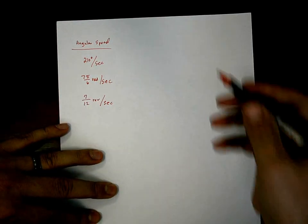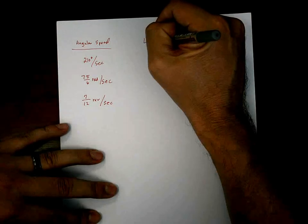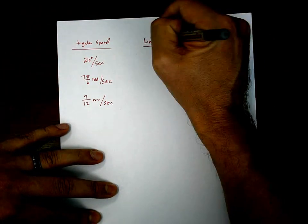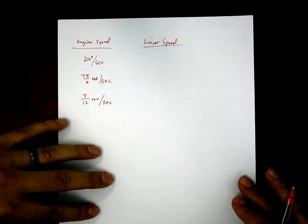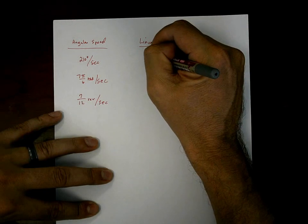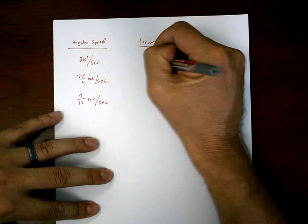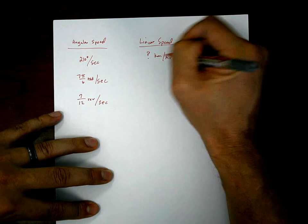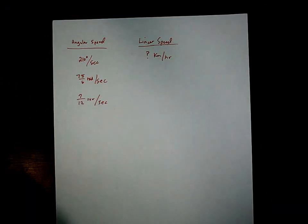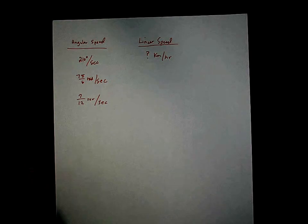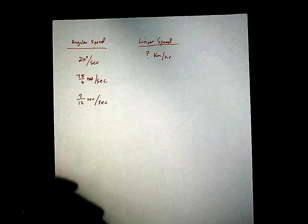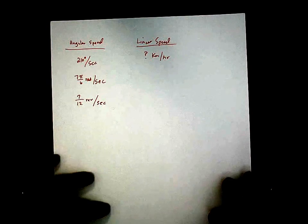What they're going to ask you for is a linear speed. A linear speed is just distance per unit of time. The most common type would be how fast the wheel was turning in kilometers per hour — we estimated probably around 5 kilometers per hour, like if I'm walking next to the car.